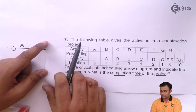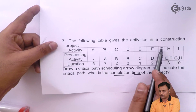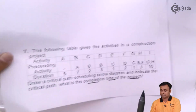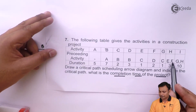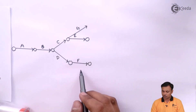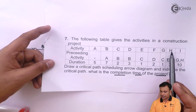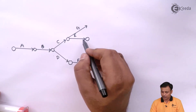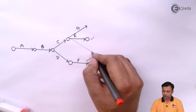So we have A, then B, then C and D. After C we have E and G; after D we have F. Now I need to join E and F, and from E and F I will have H. Then I need to join G and H to get I. We need to redraw the diagram to join E and F properly.